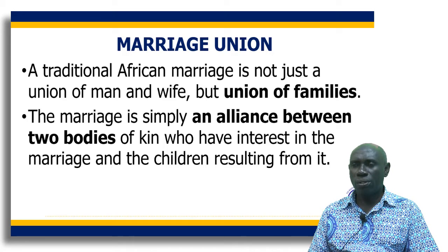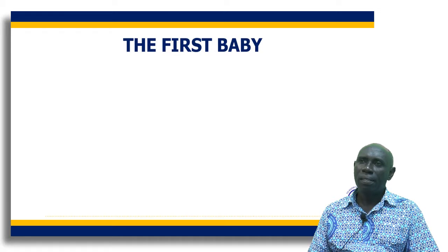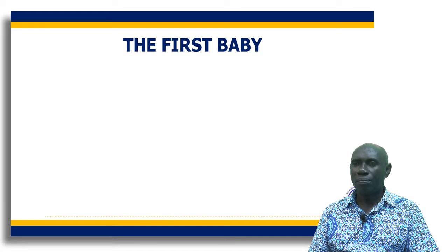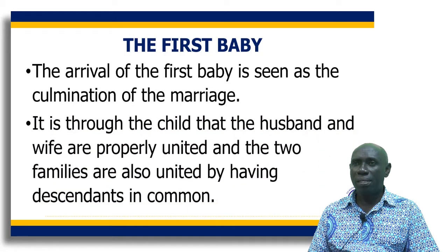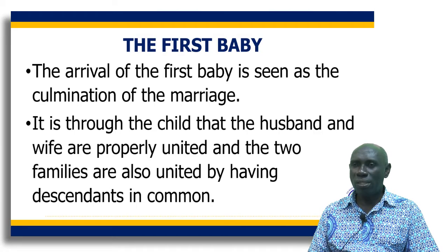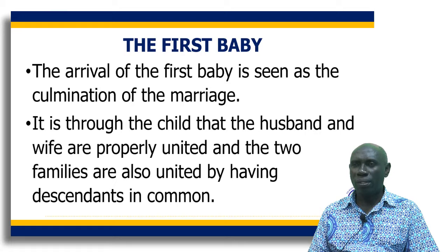The first baby is very critical to the union. The arrival of the first baby is seen as the culmination of the marriage — more or less the climax. The first baby comes to cement the union. It is through this child that the husband and the wife are properly united, and their families too are also united, because the baby is a common descendant that the two families have in common. And it is expected that there will be more of such babies.